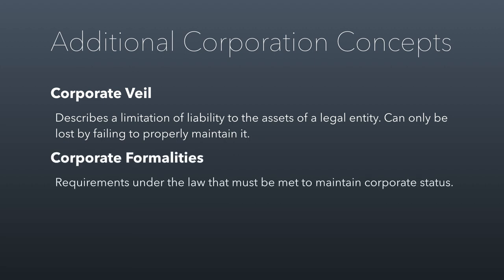There are many formalities required for maintaining a corporation — legal requirements that must be met to maintain corporate status. For example, you have to file with the state every year, hold an annual shareholders' meeting if you're a regular corporation, and hold a board meeting at least once a year for every corporation. If you're not maintaining these formalities, you could have the veil pierced or the state could take away your corporate status entirely.